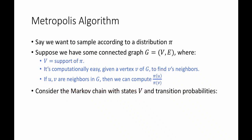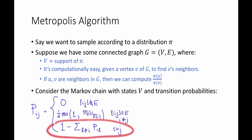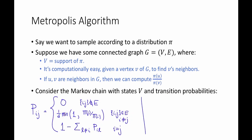At first glance this might seem like a funny consideration, but it holds in both previous examples: in the uniform distribution this ratio is always 1, and in the other example it's always 1, 2, or 1/2. In general, this comes up when you know relative probabilities but not the denominator. If all these conditions hold, the Metropolis algorithm defines the transition matrix P as follows: P(i,j) = 0 if ij is not an edge; P(i,j) = (1/d) * min(1, pi(j)/pi(i)) if ij is an edge and i ≠ j; and P(i,i) = 1 minus the sum over all l ≠ i of P(i,l). Here d is any constant larger than the maximum degree of the graph.